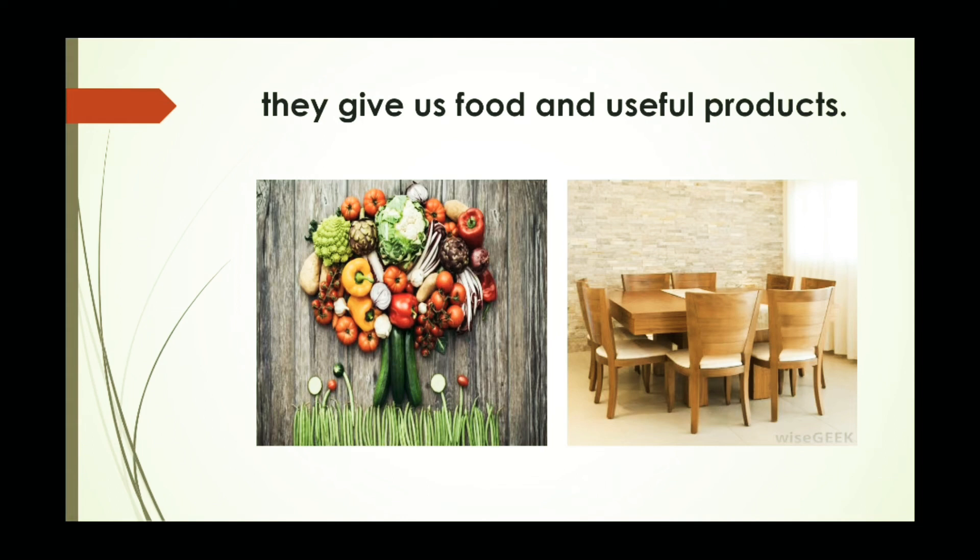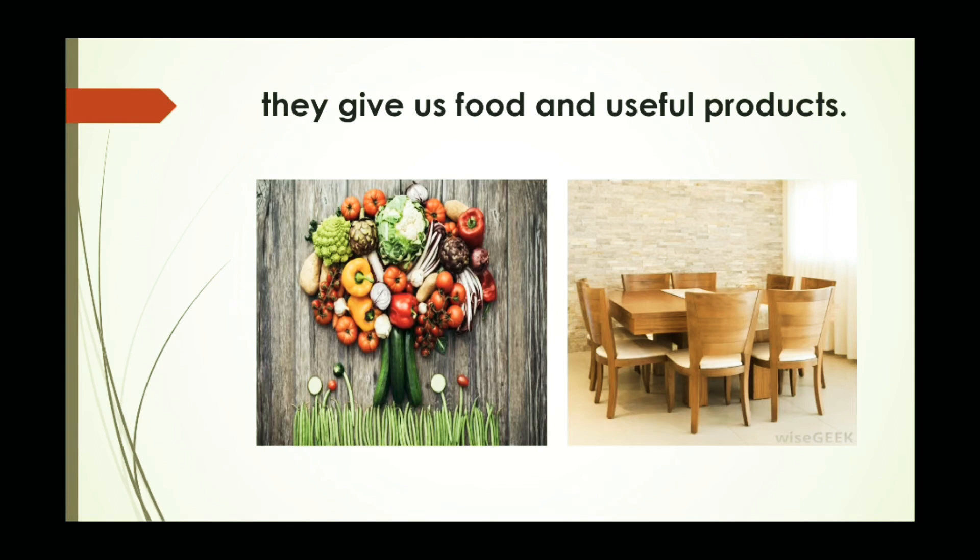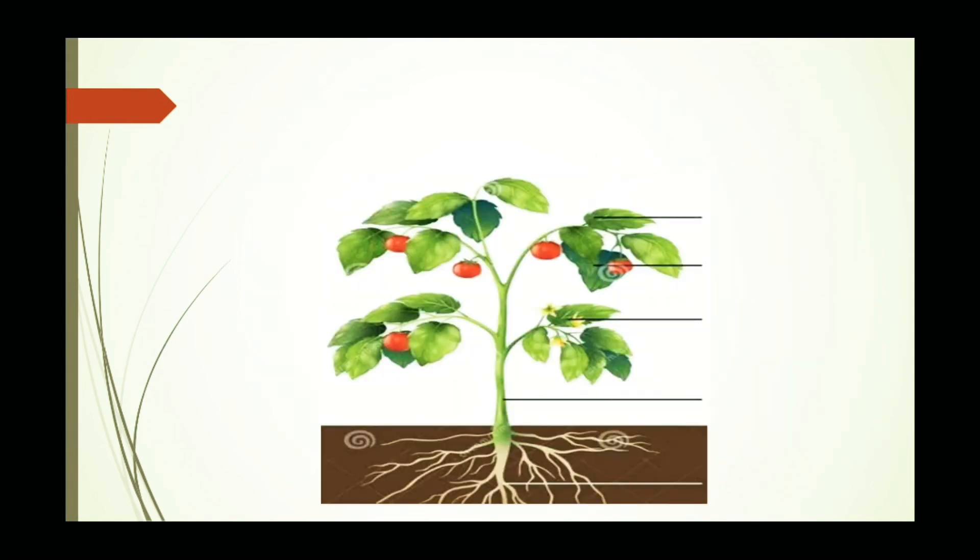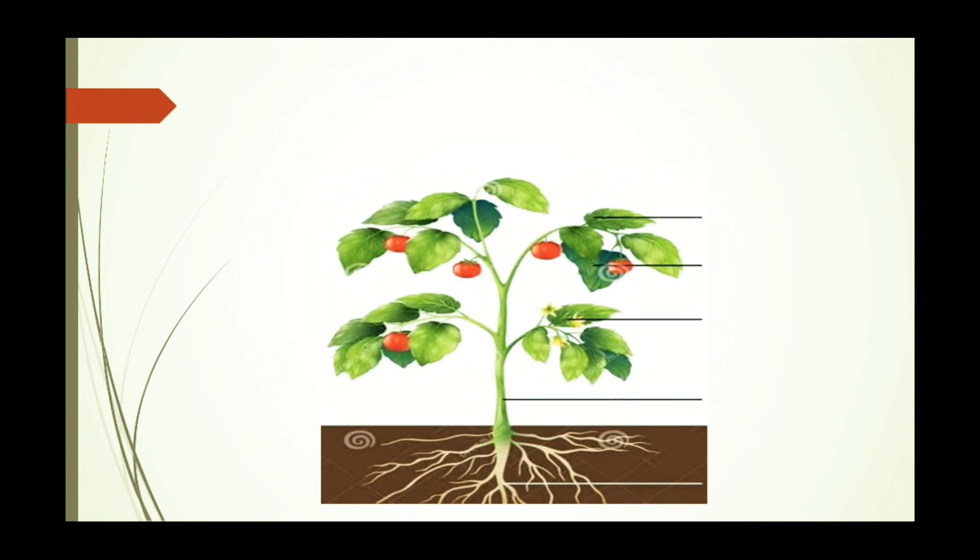Look at this picture. Here are some vegetables and chairs and tables. Then see this picture. First, first is root. Then stem, then flower, fruit, and in the last at the top of this picture, leaves are there.